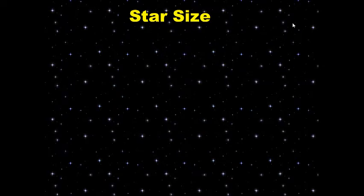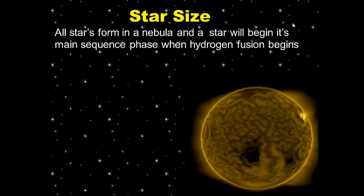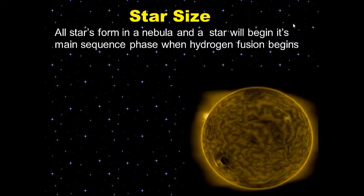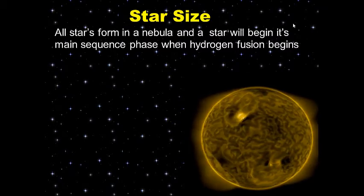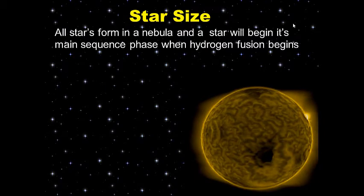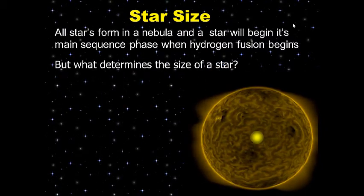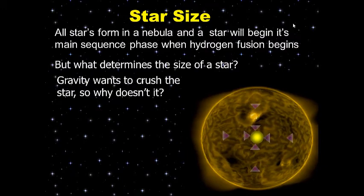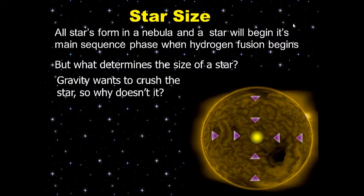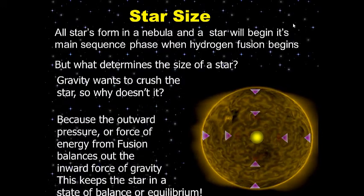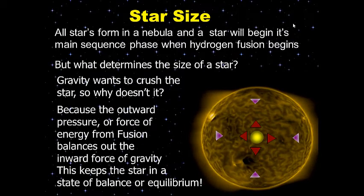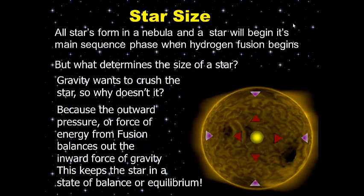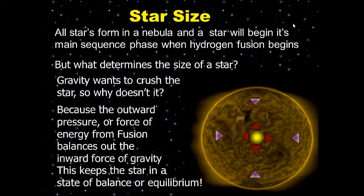All stars form in a nebula, and a star begins its main sequence phase when hydrogen fusion begins — that's when it is officially a star. Like our Sun, a yellow star, it shines brightly once it starts churning out energy. In the core, gravity always wants to crush the star, but the answer is found in the outward pressure or force of energy from fusion, which balances out the inward force of gravity.